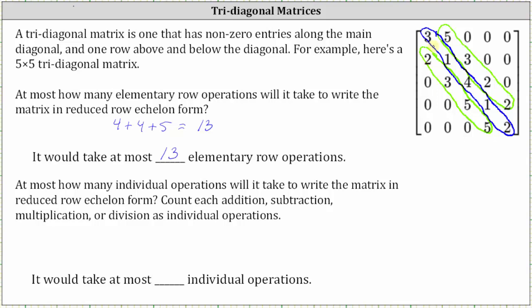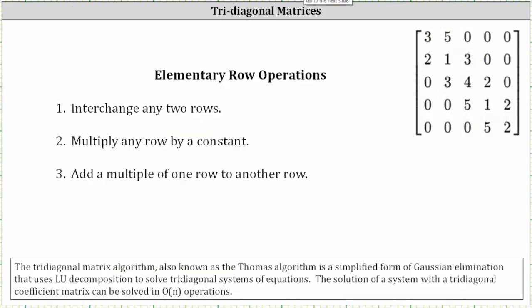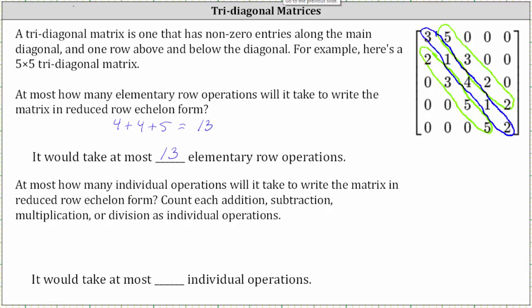For the second part, at most how many individual operations will it take to write the matrix in reduced row echelon form, counting each addition, subtraction, multiplication, or division as individual operations? If we focus on elementary row operation number three — add a multiple of one row to another — this could be considered two individual operations: first, multiply a row by a constant to get a multiple, and second, add that row to another. So it could take up to two individual operations to get zeros above and below the main diagonal, giving us at most two times four plus four.